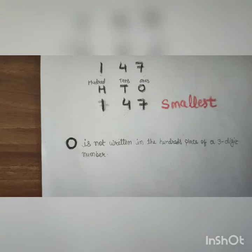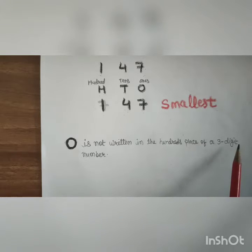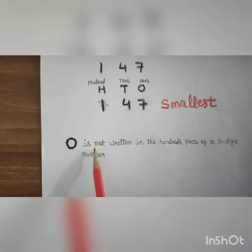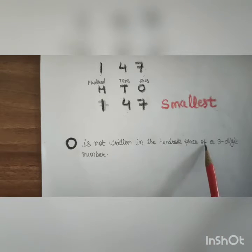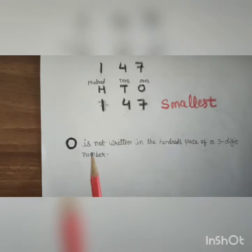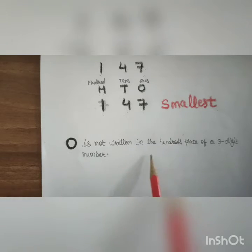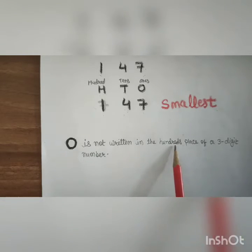For the formation of a 3-digit number, here is one important fact: 0 is never written in the hundreds place of a 3-digit number. That means in the formation of a 3-digit number, we can never place 0 in the hundreds place.